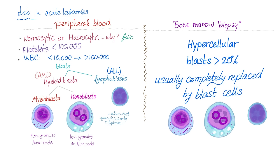Once the cell count normalizes — remission — we use the consolidation phase to prolong remission, prevent relapse, and increase survival. We can use gene expression profiling or DNA microarrays to predict prognosis and guide therapy. In some cases we may use radiation, for instance in lymphoma patients. In other cases we can use bone marrow transplant, but we reserve this for younger patients.